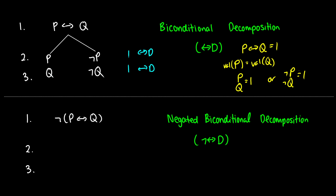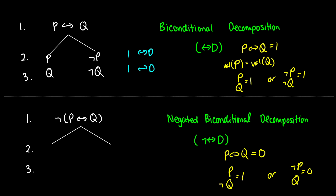What happens when we negate the biconditional? This is basically asking when is P if and only if Q false. Either P and not Q are true, or not P and Q are true — meaning P and Q have to have different values. So for our truth tree branching paths, one branch has P true and not Q true, and the other has not P true and Q true. We call this negated biconditional decomposition, and we should be checking these off when doing a full tree.